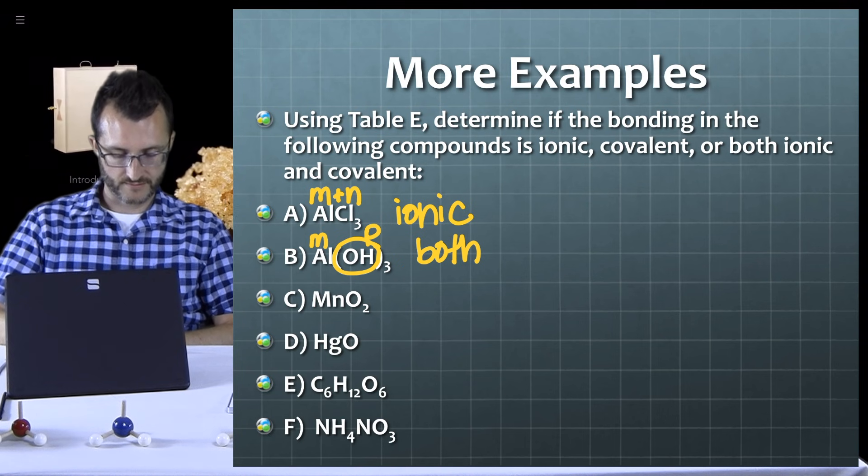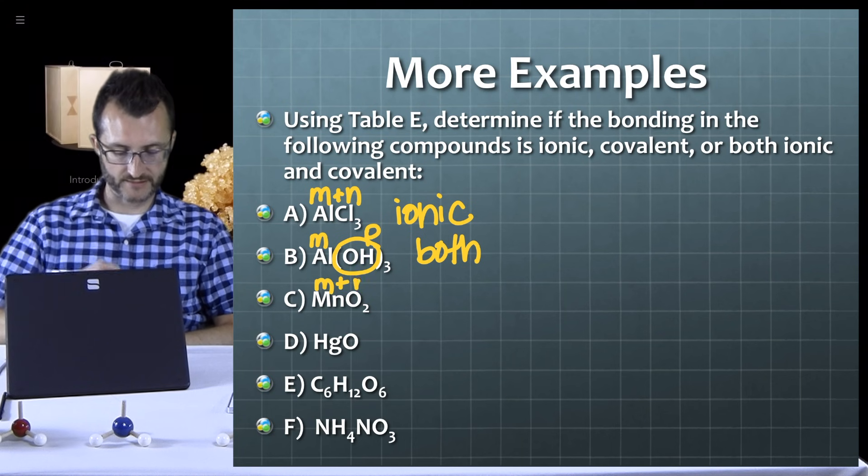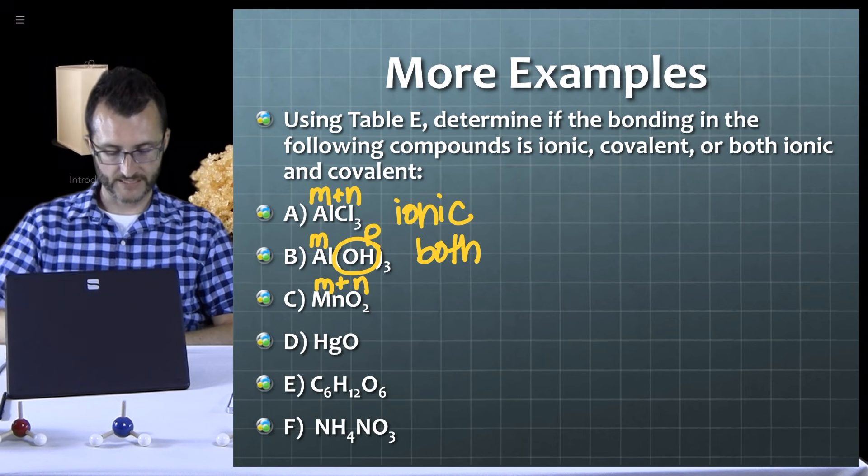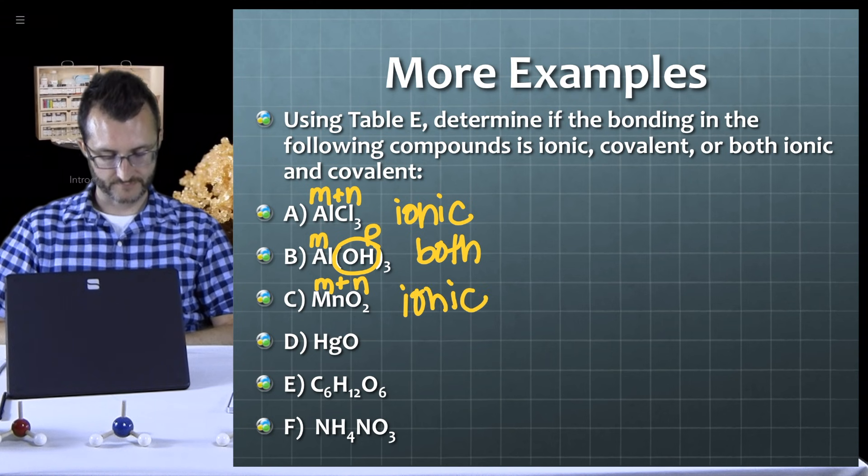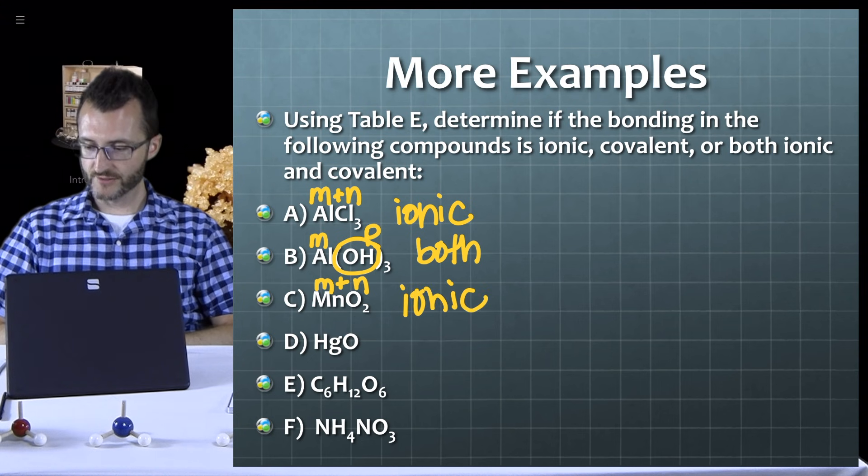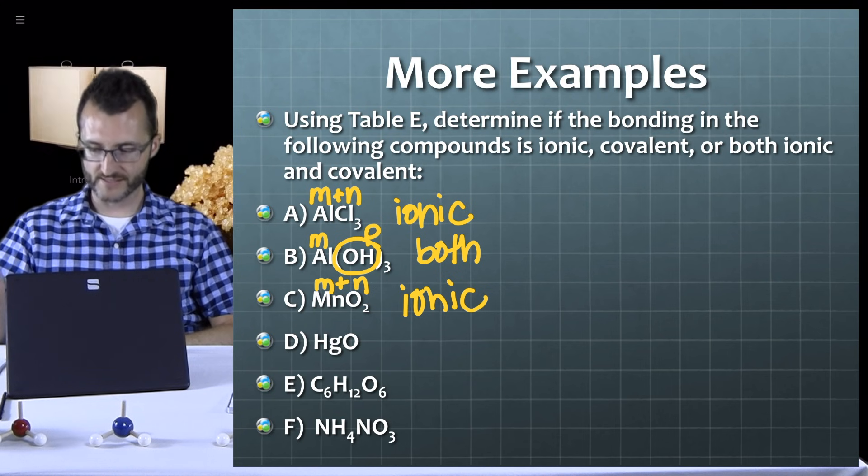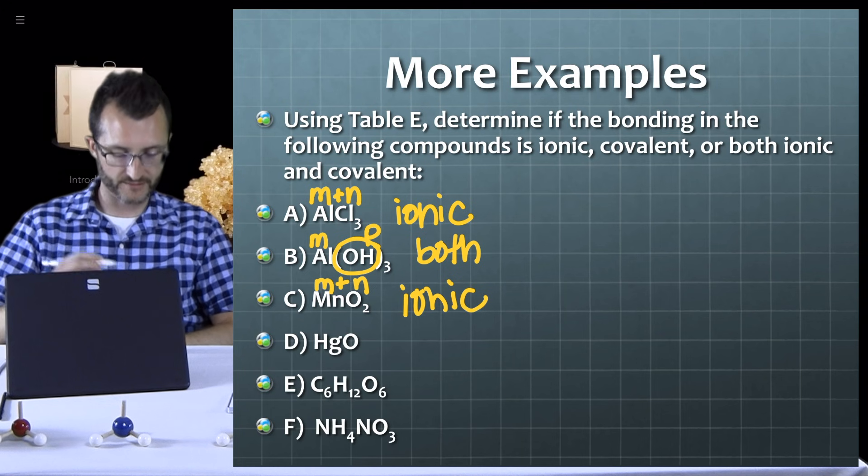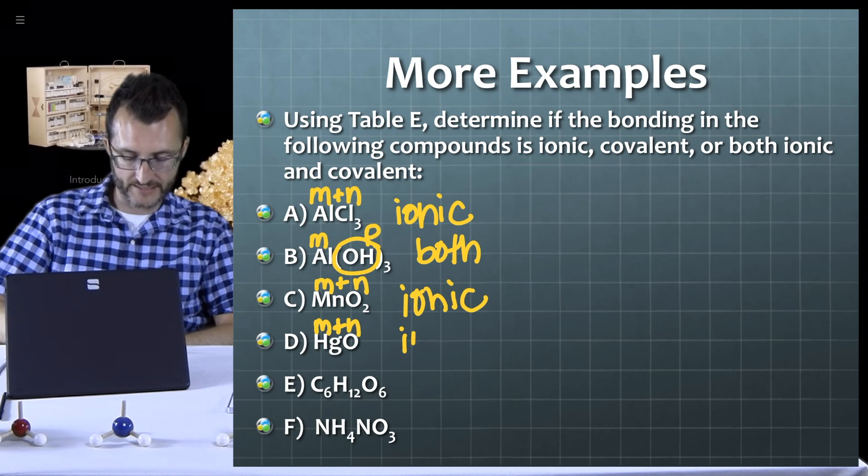Letter C here, MnO2. Alright, looks like I've got a metal and a non-metal again. Okay, so what kind of bonding? That should be ionic. Good. Letter D, HgO. I knew that there was something with Hg on table E, from what I remember, but this doesn't look like the same one. It's just regular mercury, so metal and non-metal again must be ionic. Good.